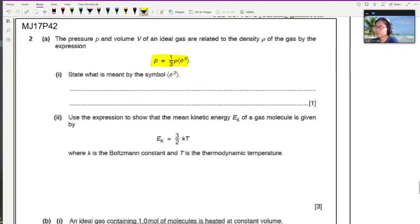So here you have pressure p and volume v of an ideal gas related to the density ρ of the gas by this expression. State what is meant by this bracket c squared. If you've watched the lecture videos, you will know that this is simply the mean squared speed. You could also call it the mean square velocity.